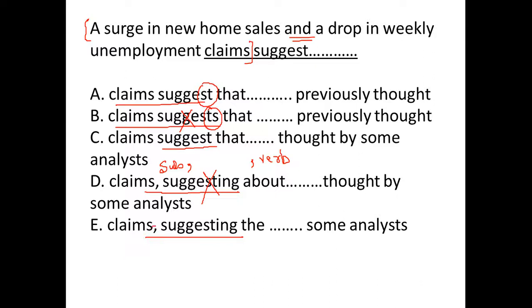Similarly, in E, after claims, we have a comma means after subject, we have a comma. Again, there is no second comma. That means again verb is missing in option E.